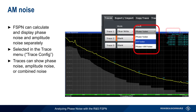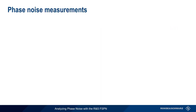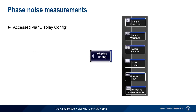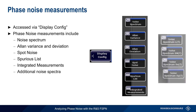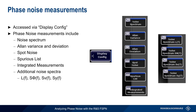The type of trace — here AM noise only — is shown at the top of the results display. The Display Config soft key brings up a list of the different phase noise measurement results that are supported by the FSPN. The first of these measurements is noise spectrum, which is the plot of phase noise versus offset that we've already covered. Additional measurements include Allan variance and deviation, spot noise, spurious measurements, and integrated measurements. The FSPN also supports additional ways of displaying noise spectrum, such as Sv(f) and Sy(f), but we won't be covering these in this presentation.